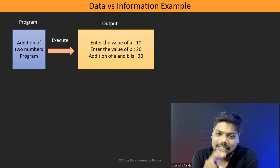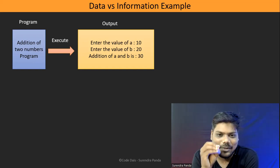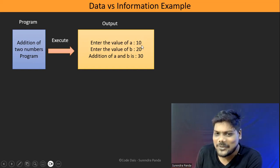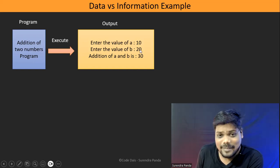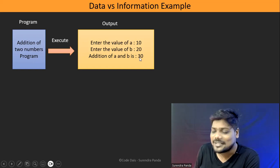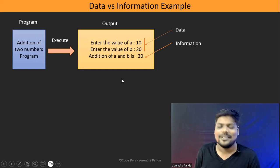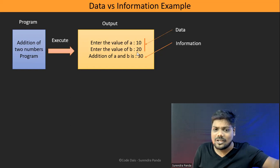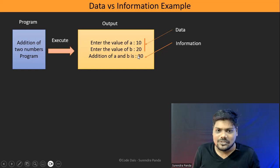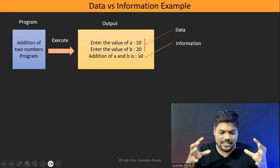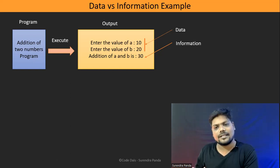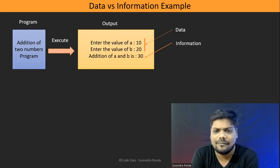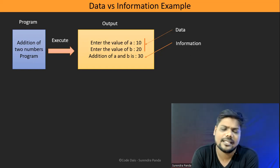Now, tell me: which one is data and which one is information? I entered two values: 10 and 20. The program gives the result as 30. So 10 and 20 are the inputs — that is the data. After processing, by applying the addition logic, we get 30. That result is the information. It is more meaningful. So input kind of things are called data; output kind of things are called information. For example, 5 factorial is the data, and 120 is the result — that is the information.